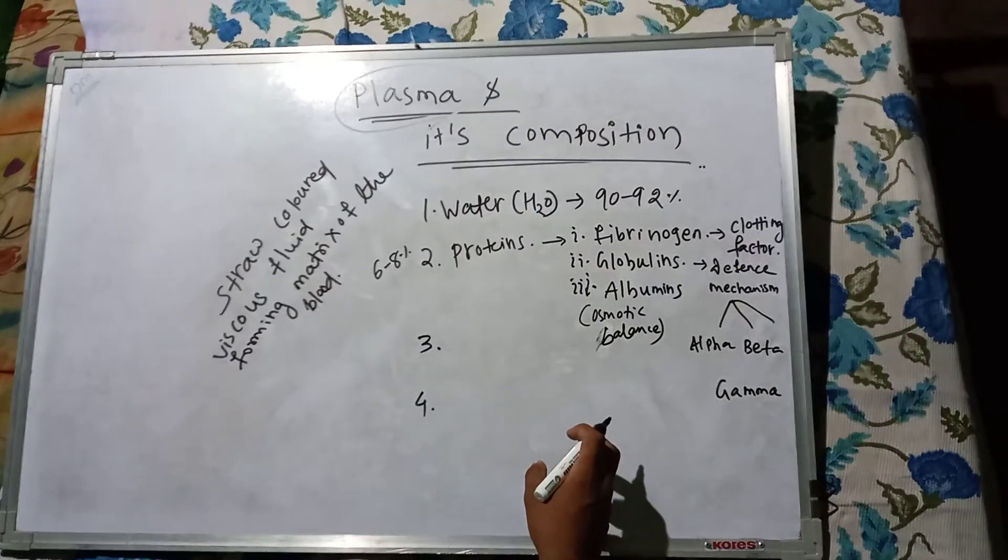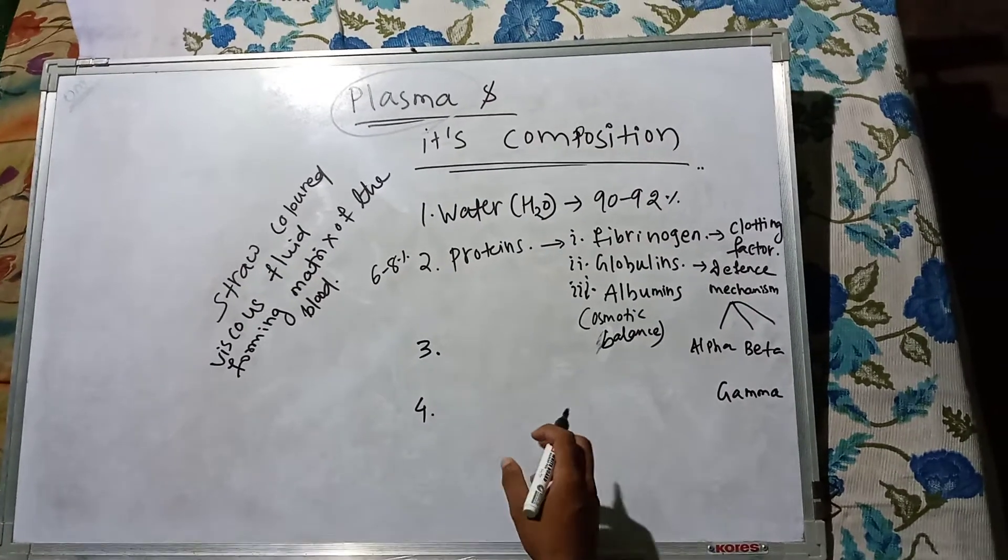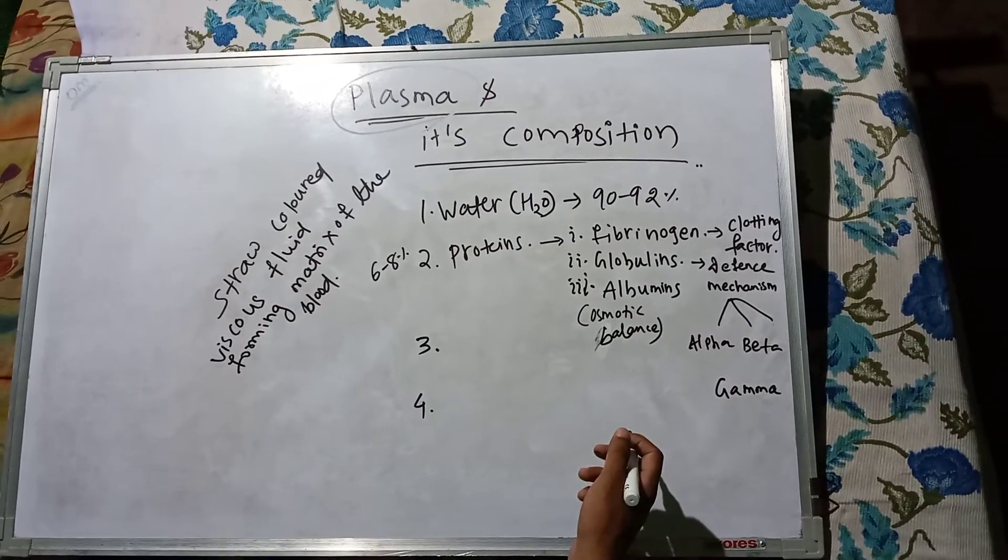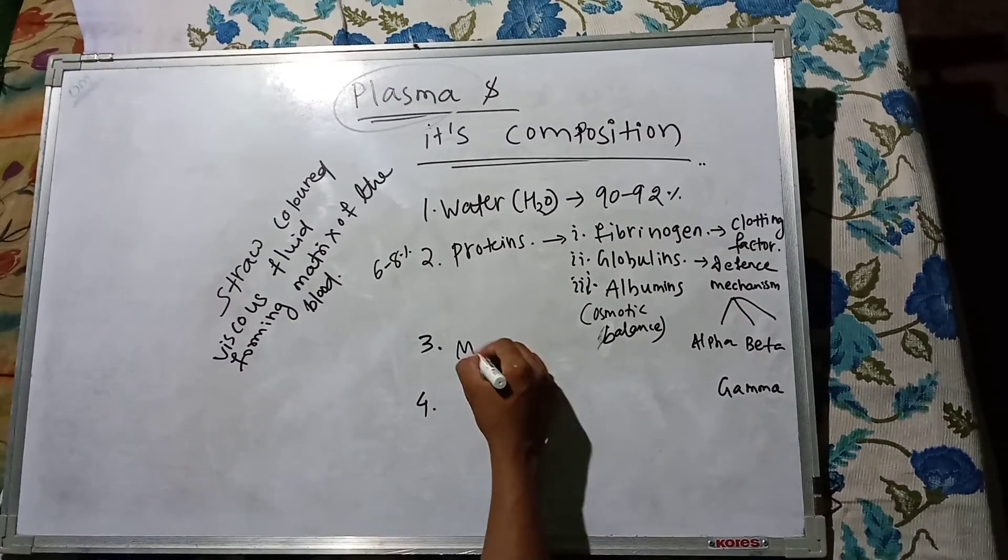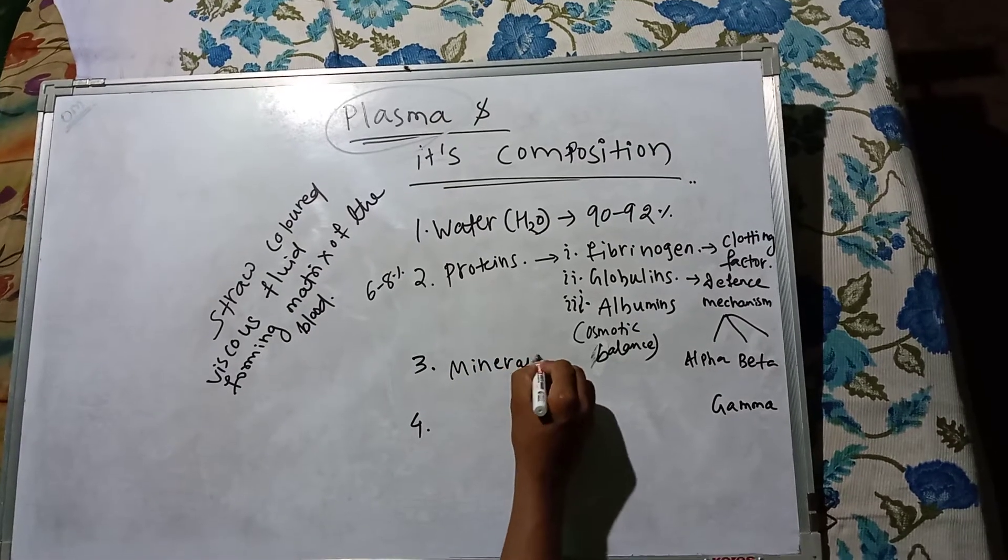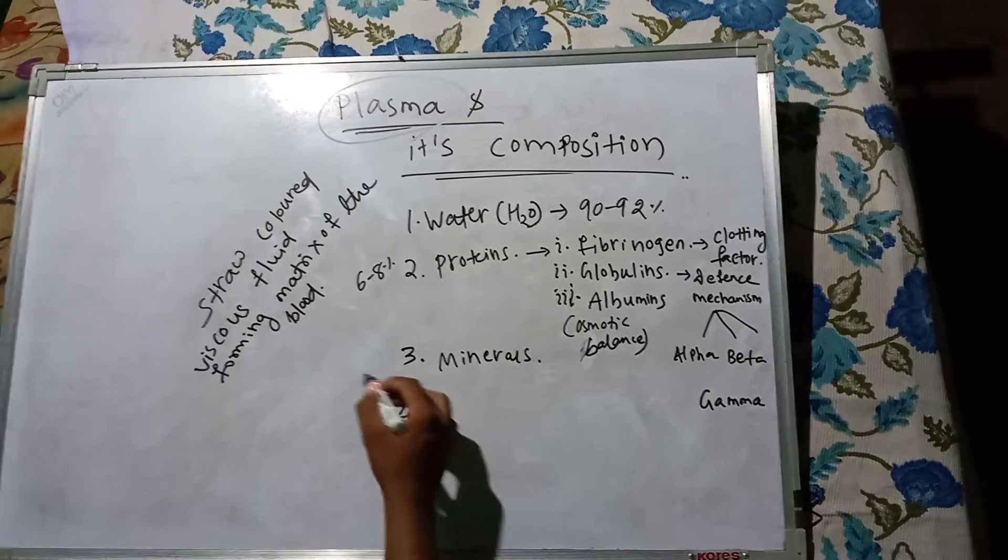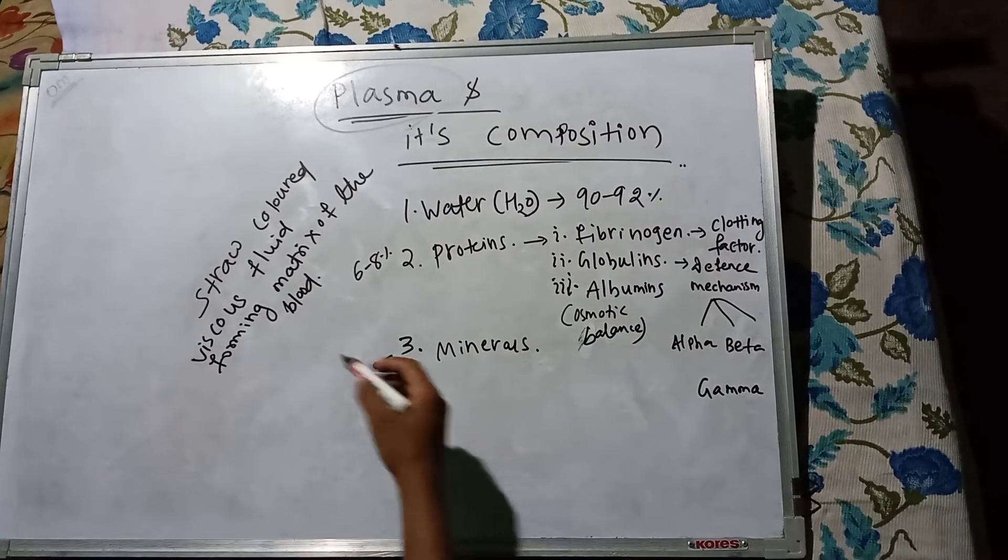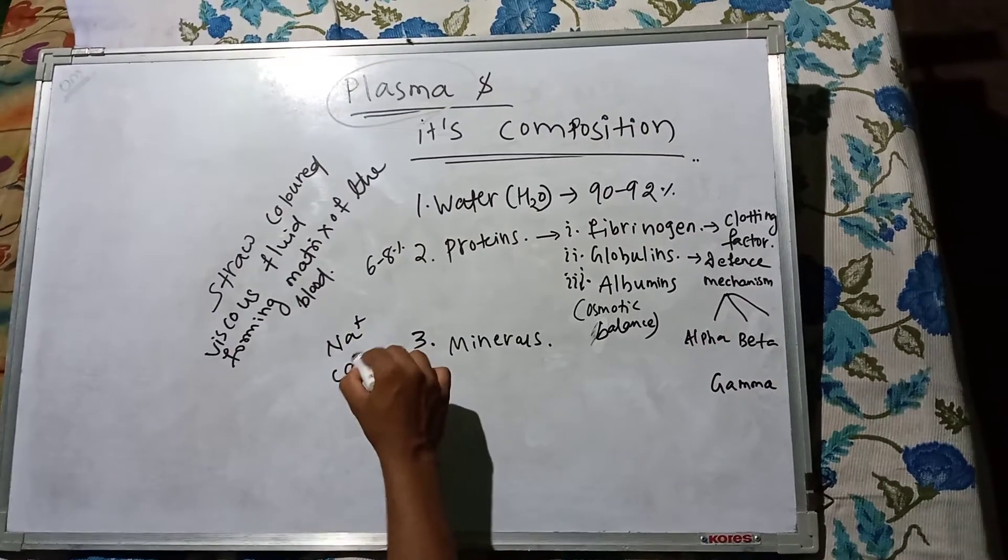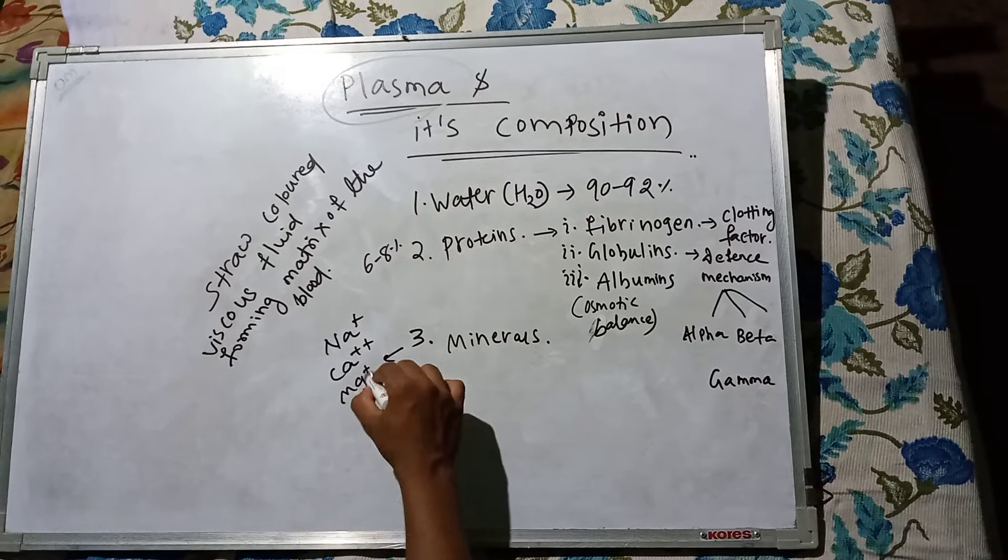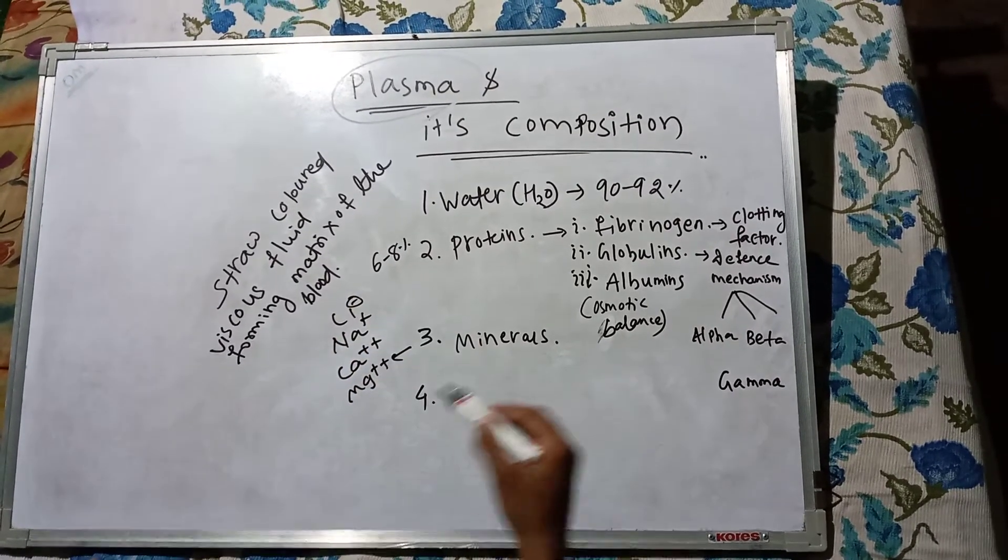The third composition of plasma is minerals. Minerals contain small amounts, and basically minerals like sodium, calcium, magnesium, and chlorine are the composition of plasma.